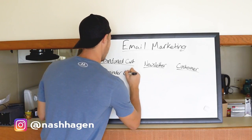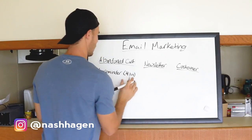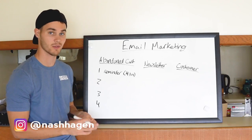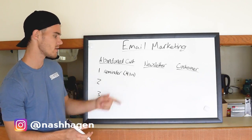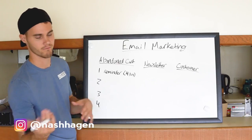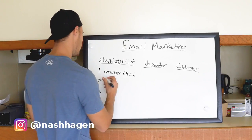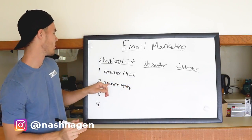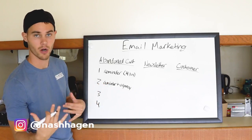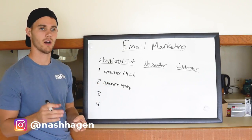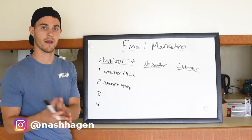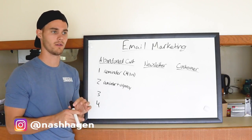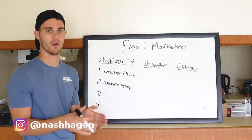I usually send the first email after about four hours. I've tested with two hours, 60 minutes, and six hours, but four hours works best for me — I'd recommend testing it out. Number two is going to be a reminder email but we're going to add urgency. You remind the customer they have something in their cart but add urgency by saying their cart will only be saved for the next 12 or 24 hours, so if they wait longer their cart will expire and they won't get the deal.